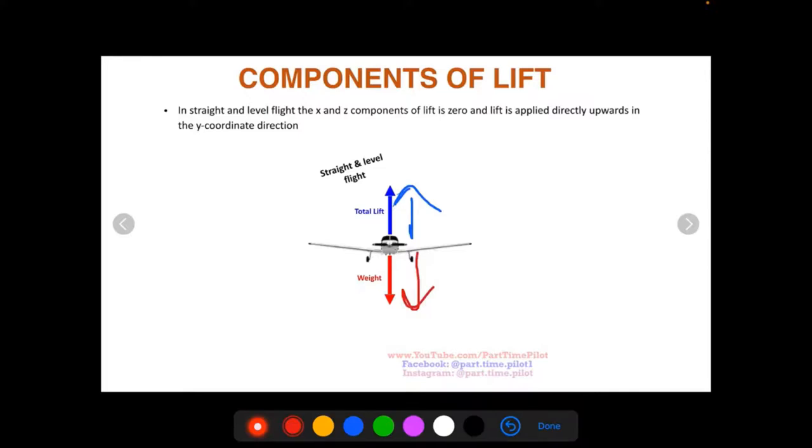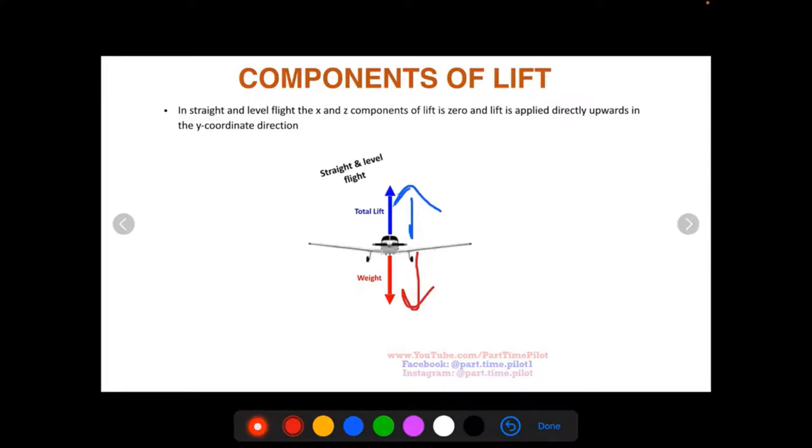In a banking turn, the lift vector changes direction. So we have our aircraft banked here, and our total lift changes direction. It's now at an angle, so now it consists of both a vertical component and a horizontal component.